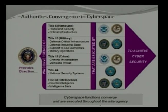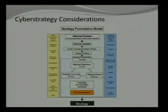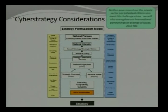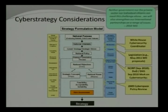The problem is how do we get an actionable framework to make this happen? The NSPS strategy formulation model is a good start — looking at internal and external areas. Overarching in the current national security strategy: neither government nor private sector nor individual citizens can meet the challenge of cyber security alone. We also need to strengthen our international partnerships. On the internal side, here are some areas where progress has been made.